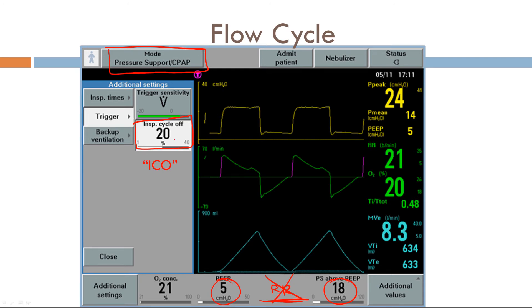Again, the cycle variable in pressure support is flow. Well, so we look at the peak inspiratory flow here. This is what we regard 100%. Once the flow reaches this set amount, or 20%, of your peak inspiratory flow, there's cycling of the breath. It means you stop inspiration.